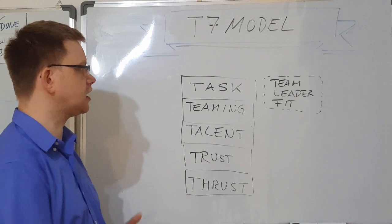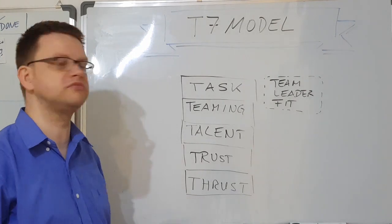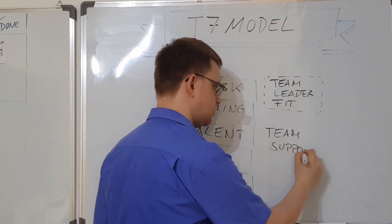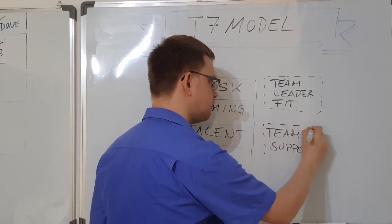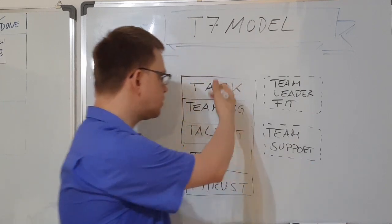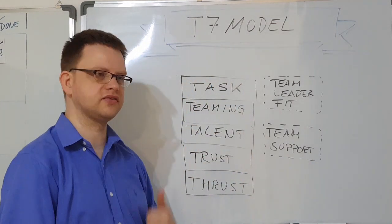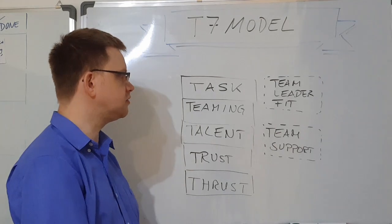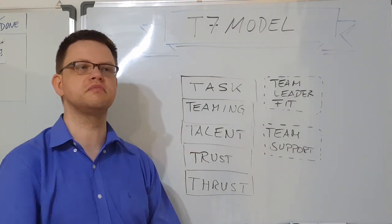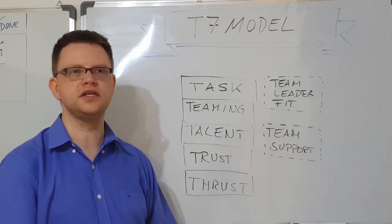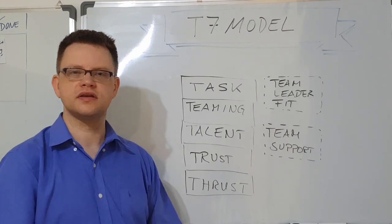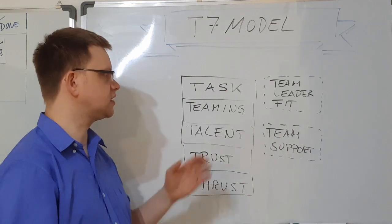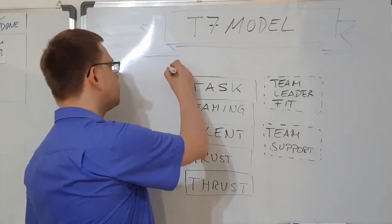Finally we have the team support, or you could also call it the team's environment. How does the surrounding organization support the team's core five T's? Does the surrounding organization provide positive incentives for the teams to actually go somewhere? Does the organization resolve impediments which stop the team from reaching the goals? Does the organization provide sufficient resources, sufficient training, sufficient information that the team can actually be successful?